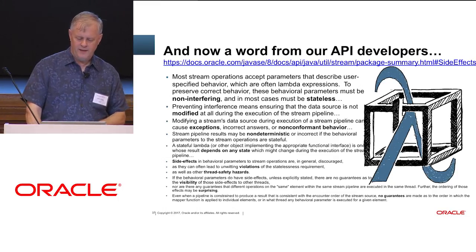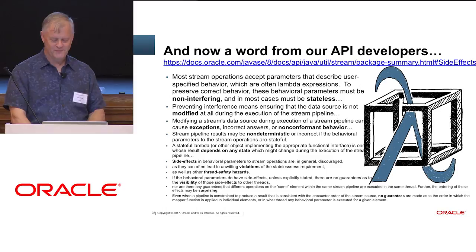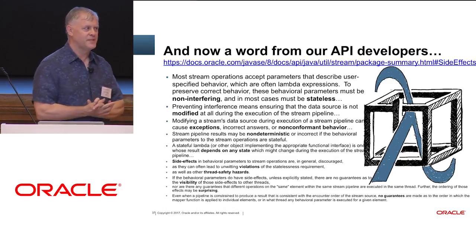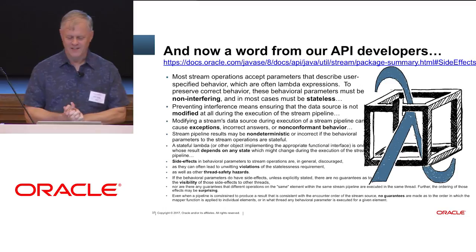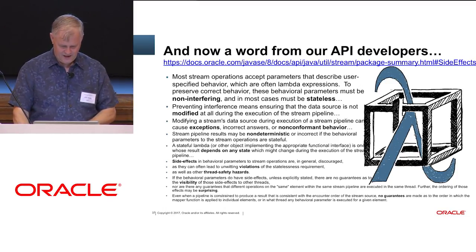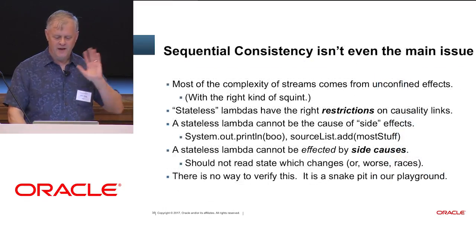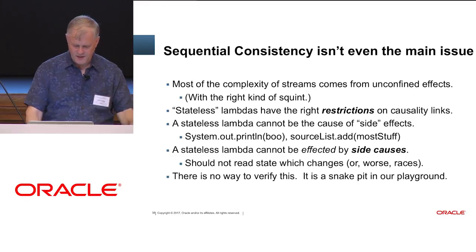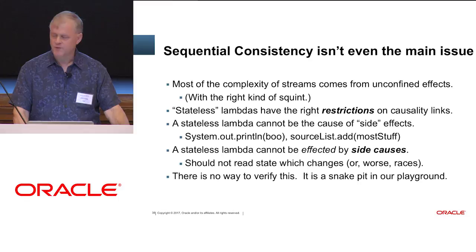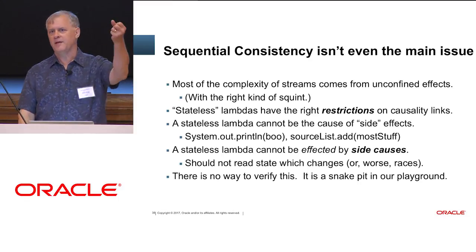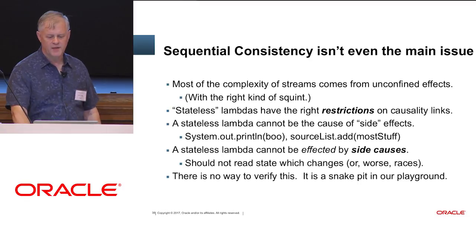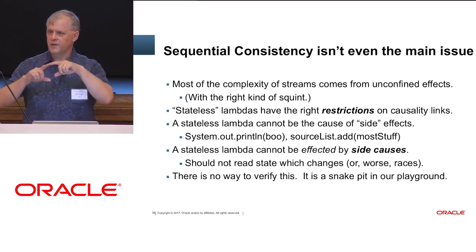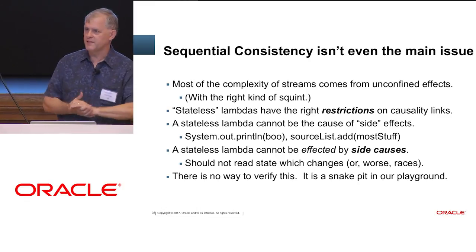Have you looked at the boilerplate lately on the streams API? Brian and his team did brilliant work writing it all up, but when you come down to it, it's one of those specifications where you say I guess I can learn to live with this given how useful it is. It's funny it can't be simpler. Sequential consistency — even if you win that — you still lose the game of statefulness. The complexity of streams, even under sequential consistency, comes from unconfined effects. When you pass a lambda in, nobody can prove, nobody can check that the lambda is doing the right thing. It's not confined. Stateless lambdas need to have the right restrictions on their causality.